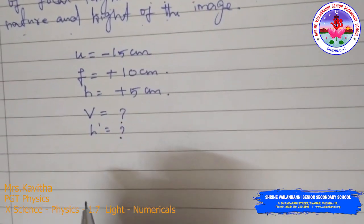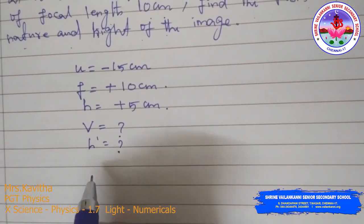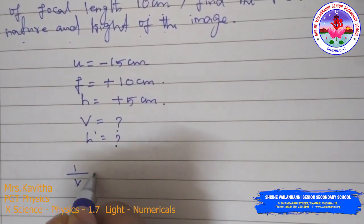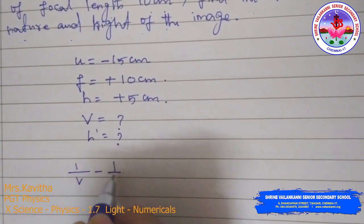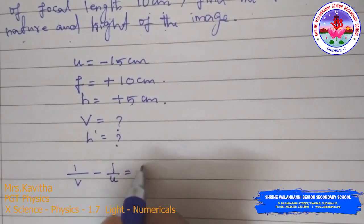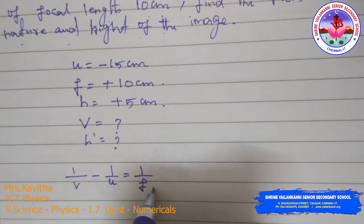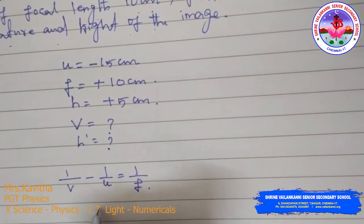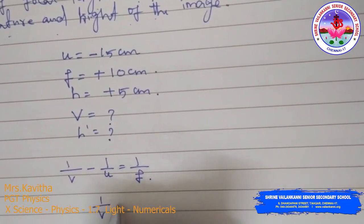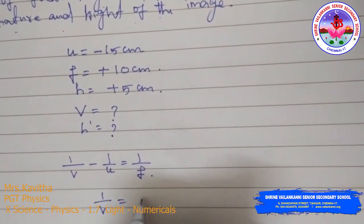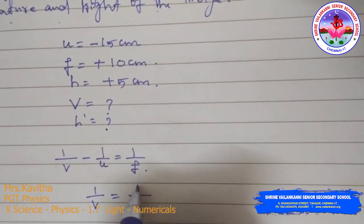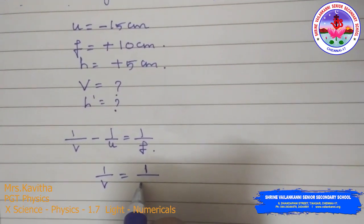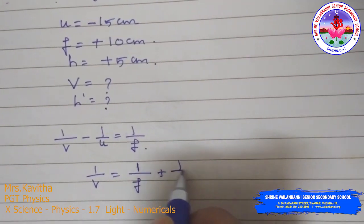What is the formula? The lens formula is 1/V − 1/U = 1/F. Rearranging to find V: 1/V = 1/F + 1/U.